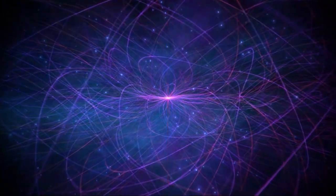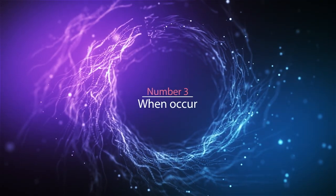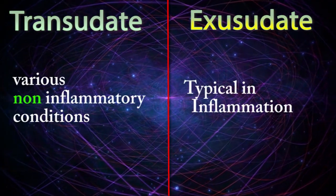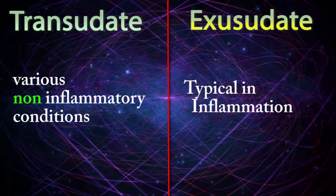Difference number three: when they occur. Transudate is produced in various non-inflammatory conditions, but exudate is typical in inflammation.